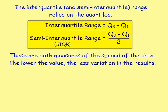The interquartile and semi-interquartile range are measures of the spread of the data. If you end up with a lower number, it means there's less variation — the results are closer together. If you end up with a bigger number, the results are more varied. They mean absolutely nothing on their own, but you can use them to compare two different data sets.